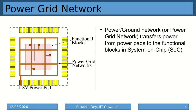The power grid network transfers power from power pads to the functional blocks in a system-on-chip. In the diagram you can see the functional blocks and the 1.8V power pad. To transfer power from the 1.8V pad to the functional blocks, metal grids are constructed, and with the help of this grid the power is transferred.